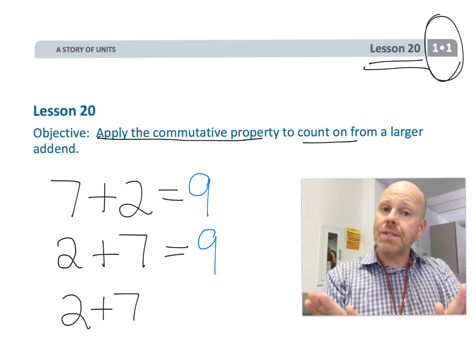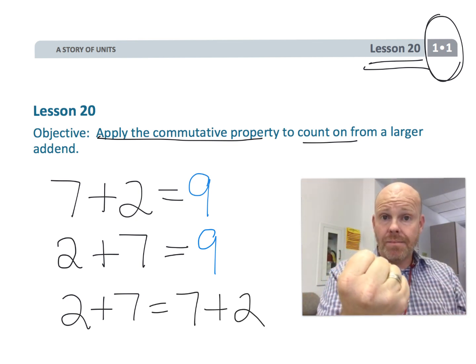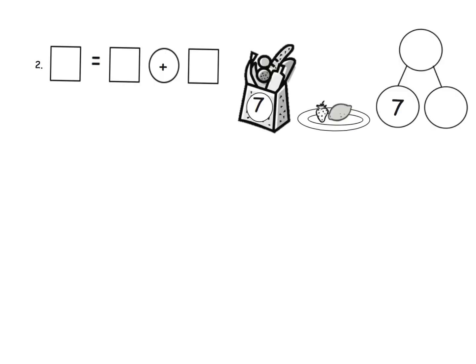So here we're being asked to take this situation and write it in a number sentence where we begin with the larger part, the larger addend. I'm looking at this and I've got a basket of seven pieces of fruit and then I've got two little pieces of fruit right here.